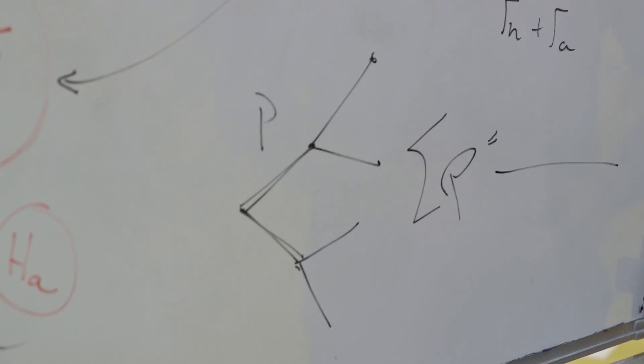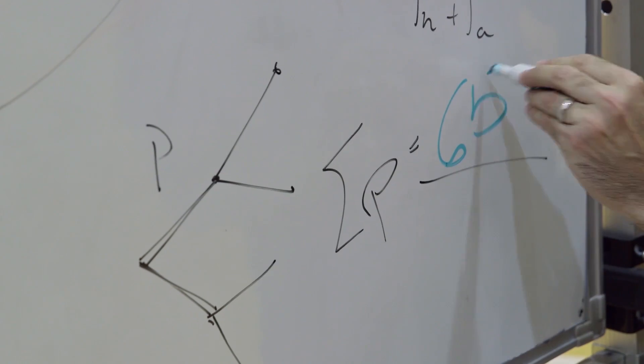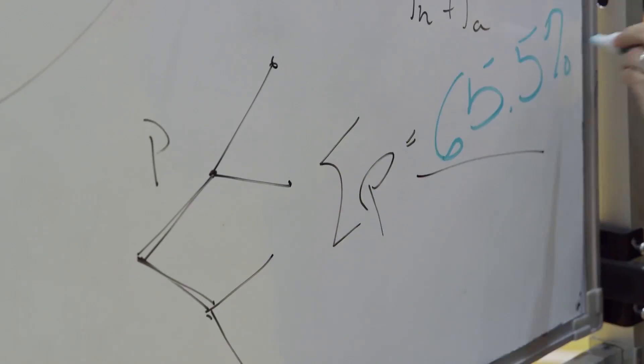And do you know what the probability that the Spurs win is? Well, the Trinity Maths Department thinks that that probability is 65.5%.